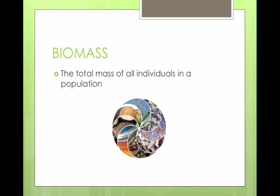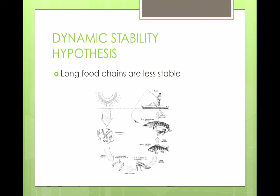When we talk about biomass, we're talking about the total mass of all the individuals in a population. The dynamic stability hypothesis states that longer food chains are less stable than shorter ones.